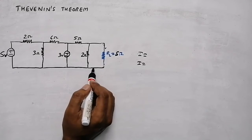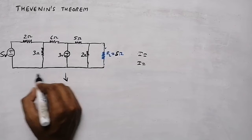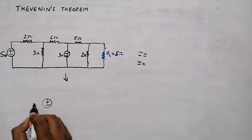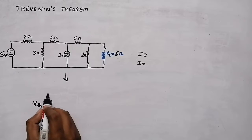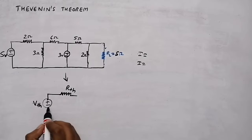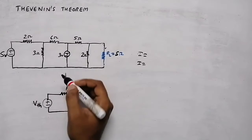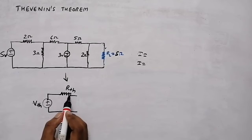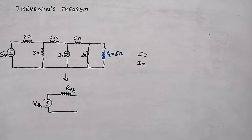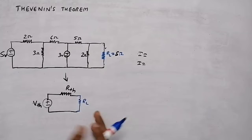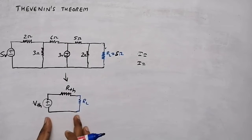Instead of that, up to this big circuit, we can convert it into its equivalent circuit with a voltage source — that is Thevenin's voltage Vth — and a resistor in series with that — that is Thevenin's resistance Rth. If we know the values of Vth and Rth, placing any load becomes very easy because we've converted the big circuit into a small one.